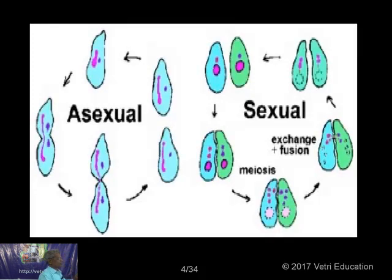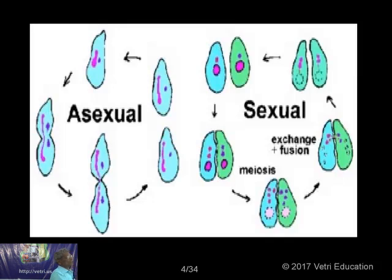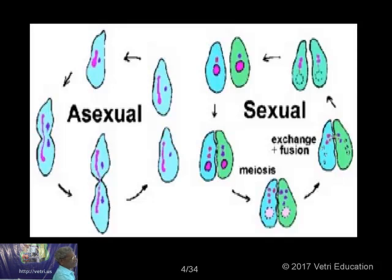Asexual or vegetative reproduction allows plants to reproduce by a very simple mechanism. In sexual reproduction, it normally takes place between male and female. The microorganisms come together — one from the male category, another from the female category, or plus and minus strain. They come together, a contact is established, and then the nucleus of one fuses with the other. Then it undergoes meiosis. This is how sexual reproduction is accomplished in very simple organisms.